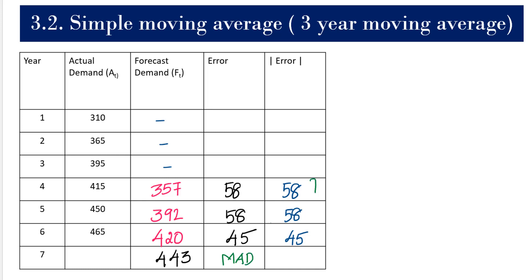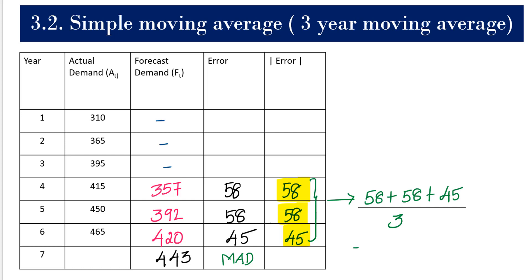Now I want to calculate the Mean Absolute Deviation (MAD). MAD is calculated by taking the sum of absolute errors and dividing by the number of periods. The sum is 58 plus 58 plus 45, divided by 3 periods (periods 4, 5, and 6). This gives us 161 divided by 3, which equals 53.66, approximately 54. So the Mean Absolute Deviation is 54.